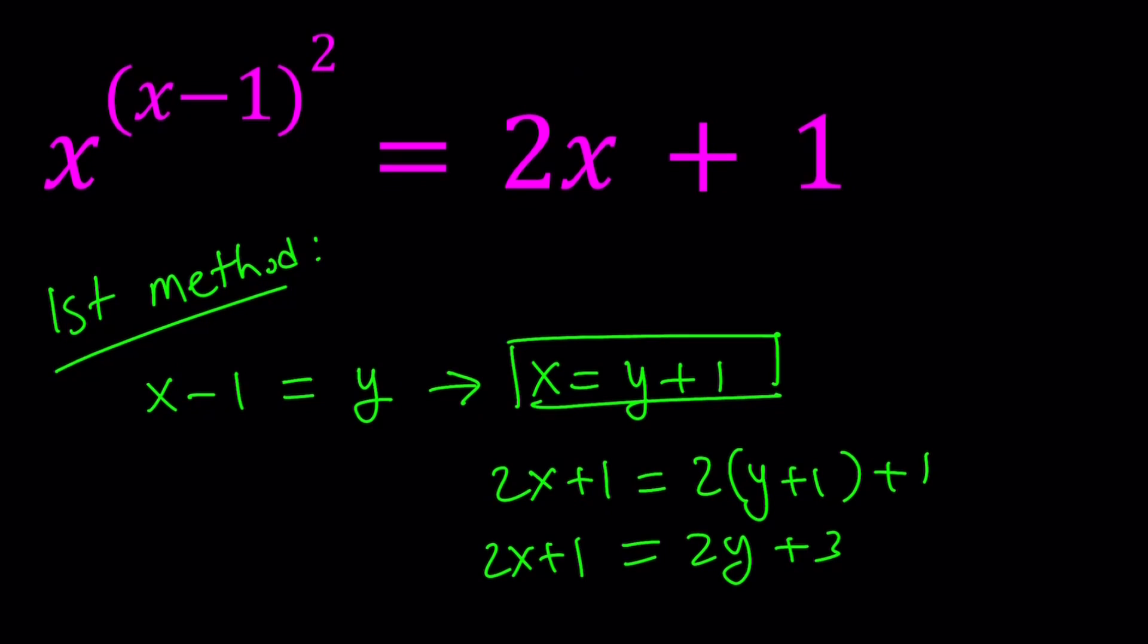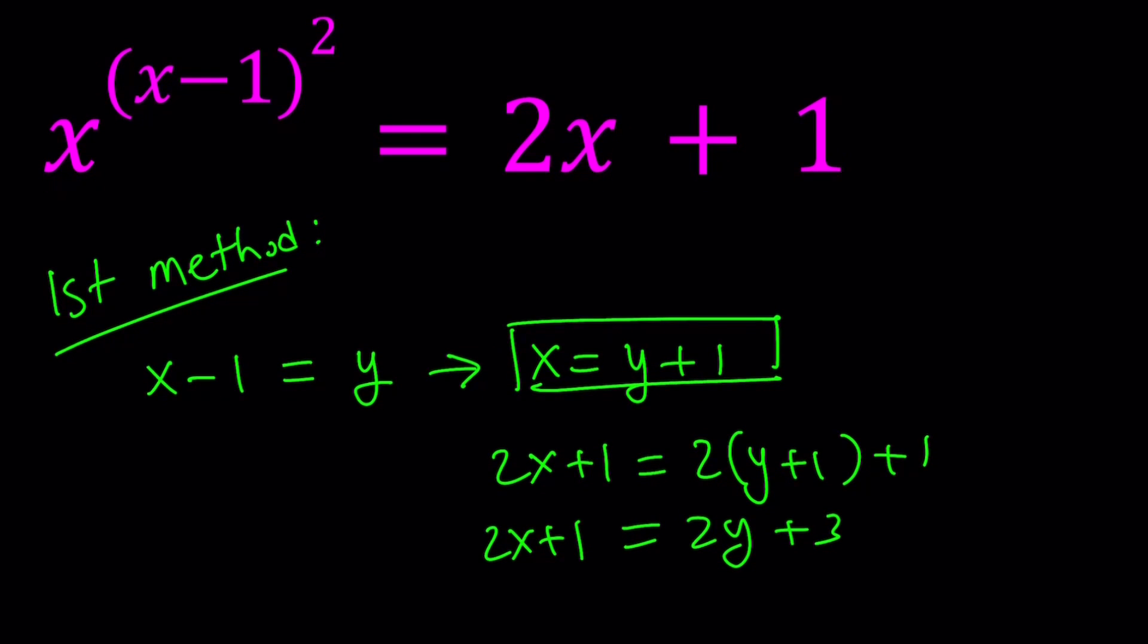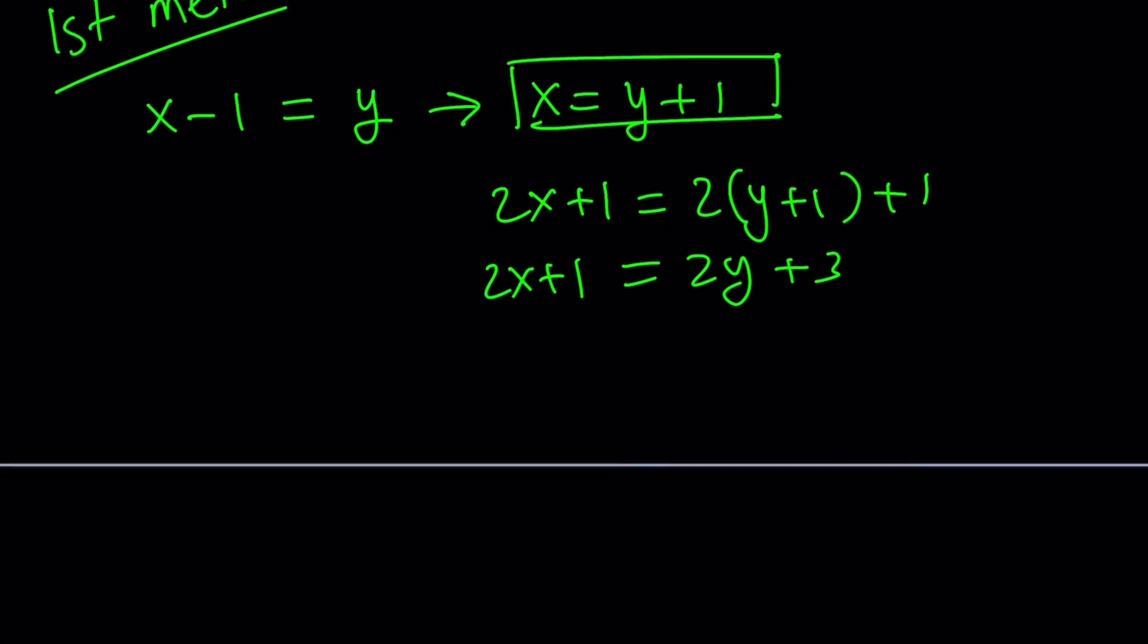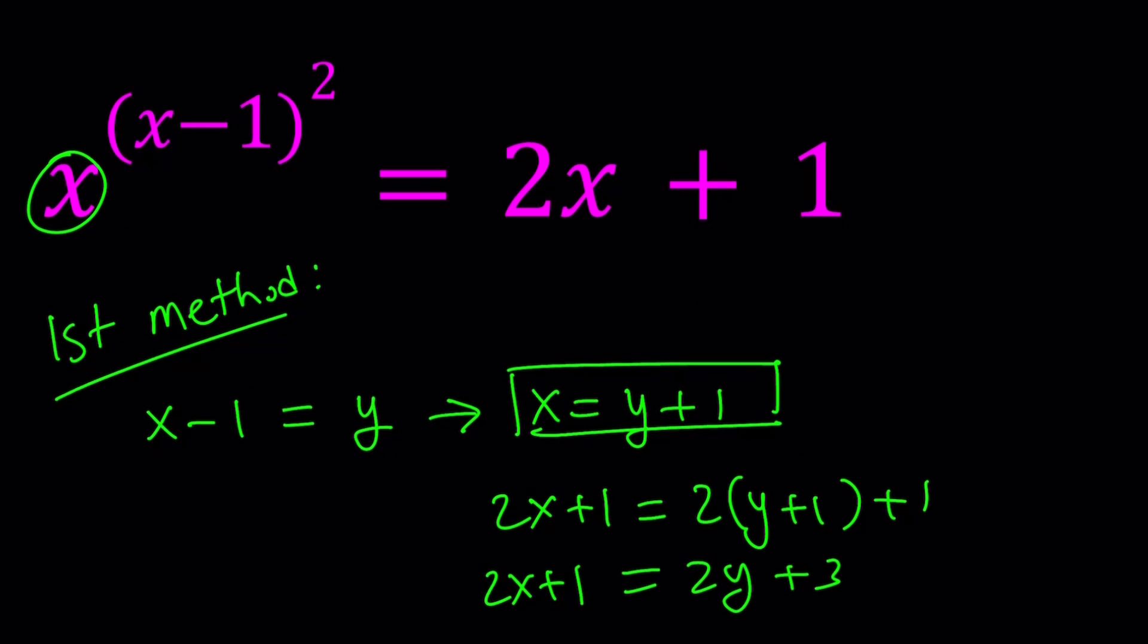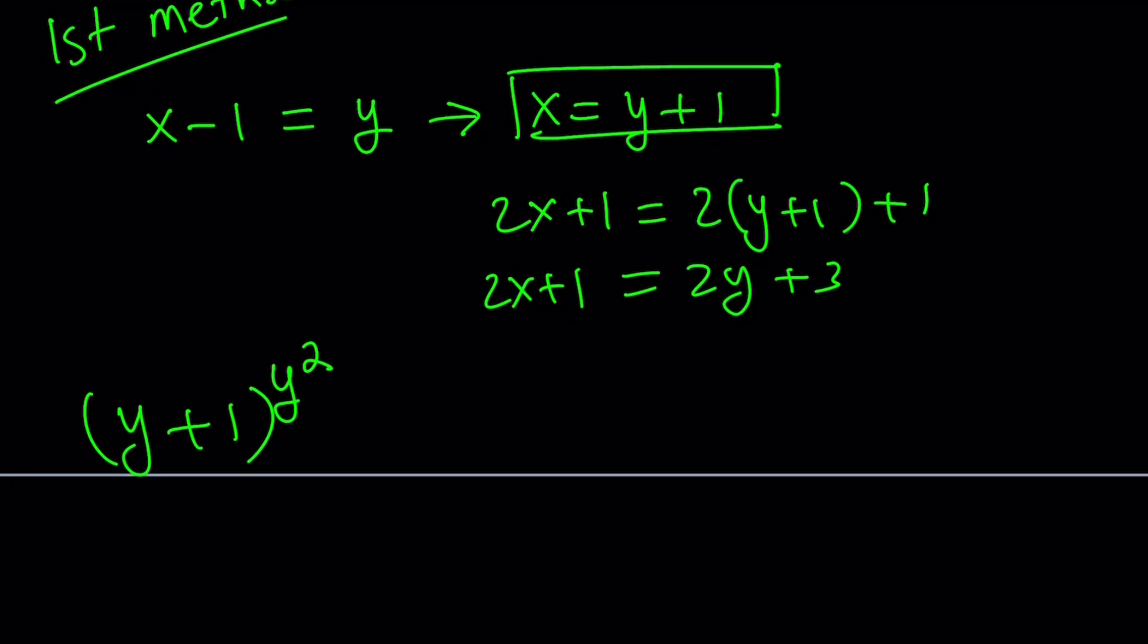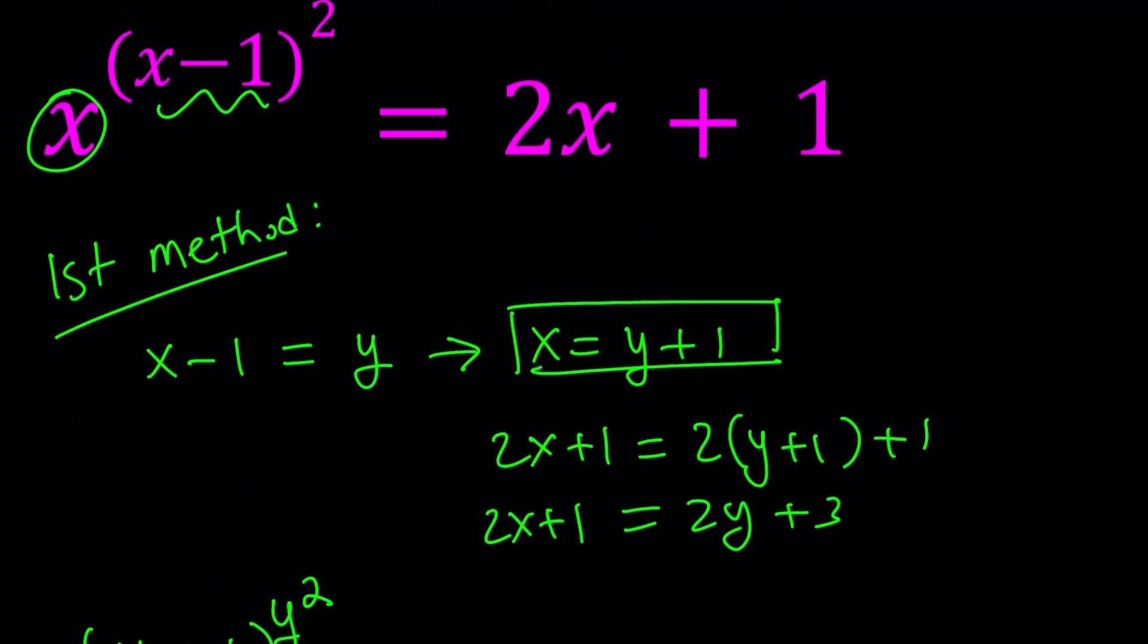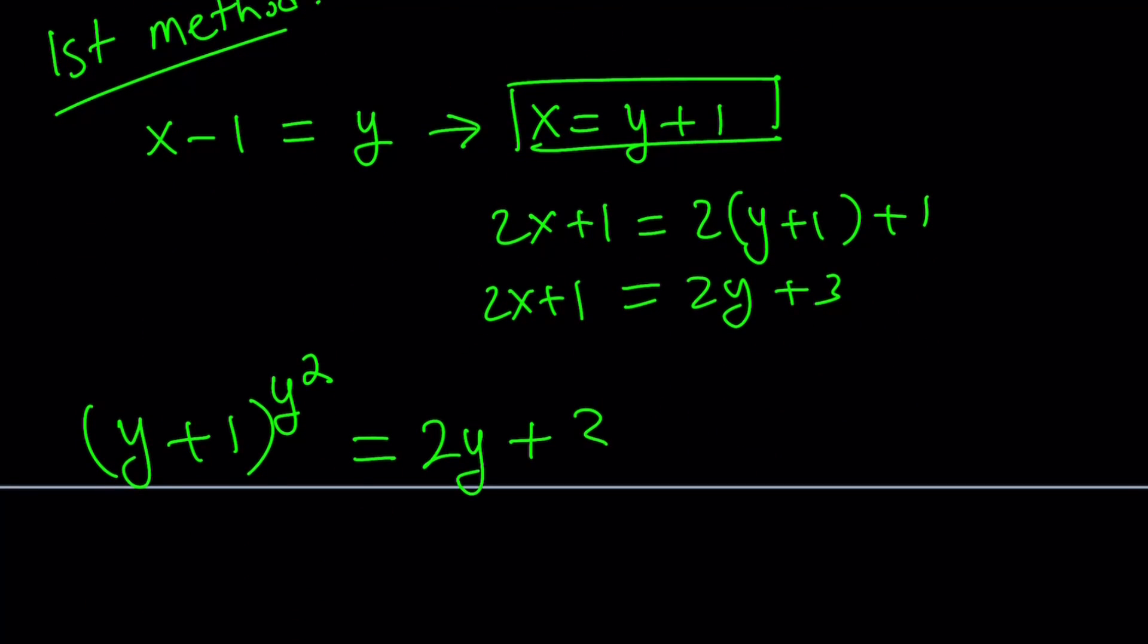We're going to replace x with y+1 and so on. Replace x with y+1, that's our base. Now that simplifies the exponent a great deal because we're replacing x-1 with y. So that gives us y² in the exponent. And the right hand side is 2x+1 which can be replaced with 2y+3.